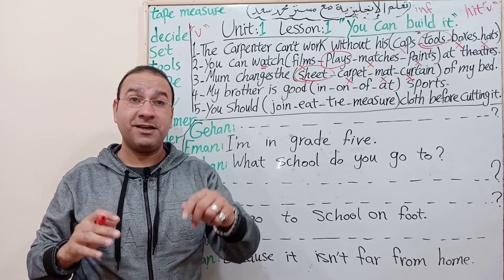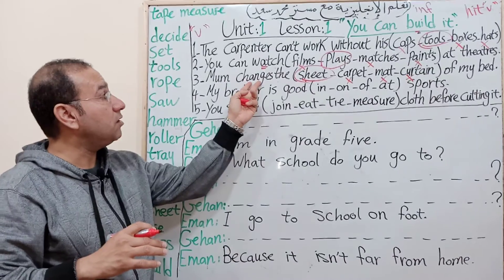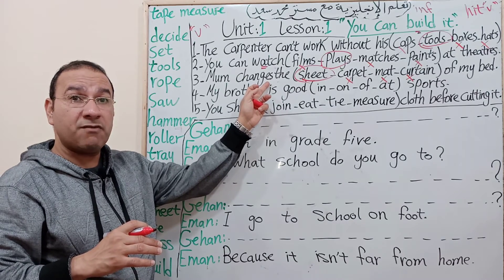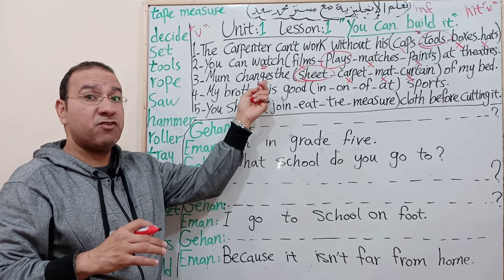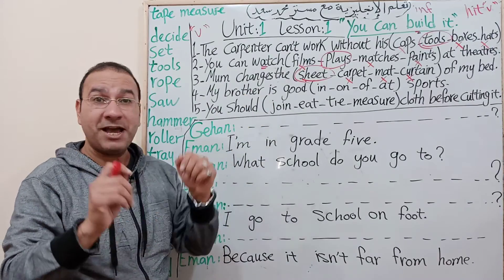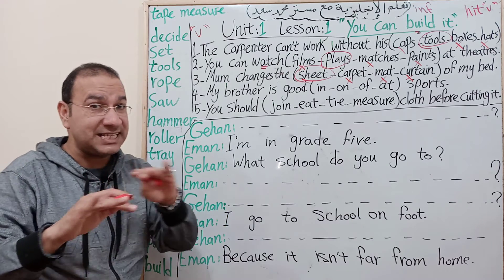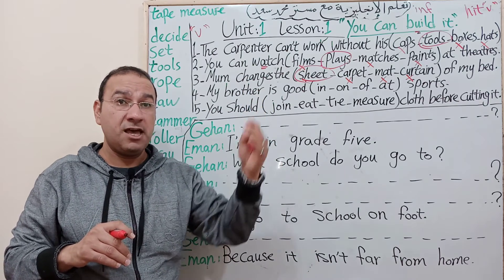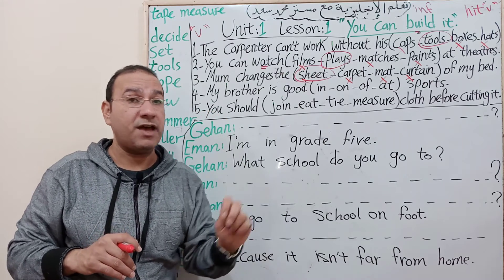Very good - present simple! The verb agrees with the subject. Why does it have 's'? Because 'mom' is third person singular feminine - she/he/it takes 's' on the verb. We made an important video about present simple in the playlists - watch the videos on affirmative, negative, and interrogative forms.